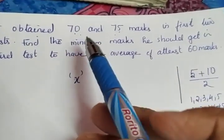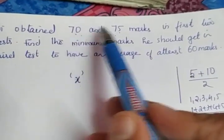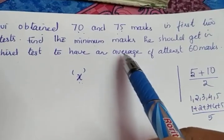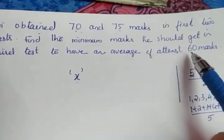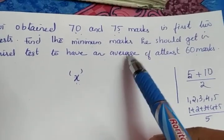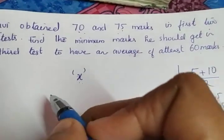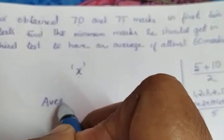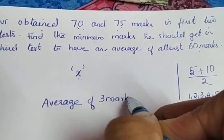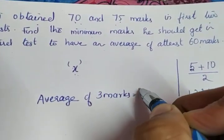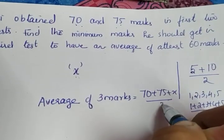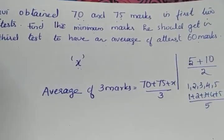In the same way here, the question speaks about three marks: 70, 75, and x. The average of three marks is calculated by summing all the marks and dividing by 3. So the average is (70 + 75 + x) / 3. That is the average of all three marks.